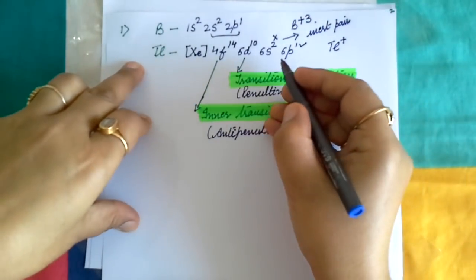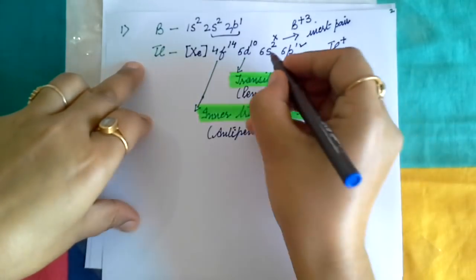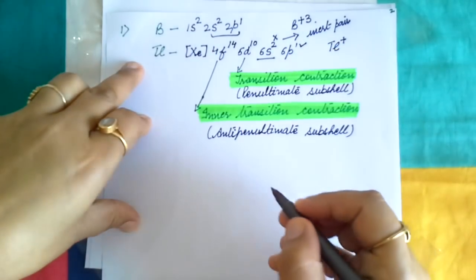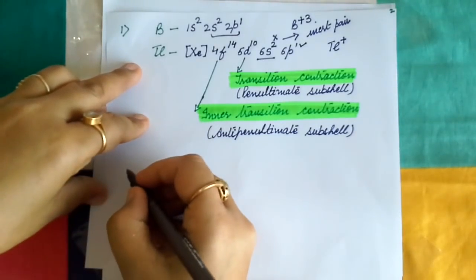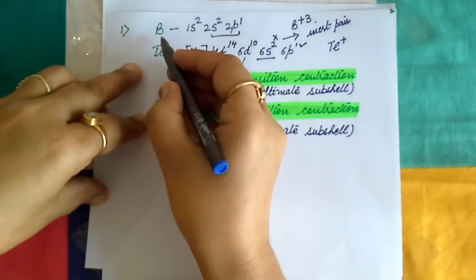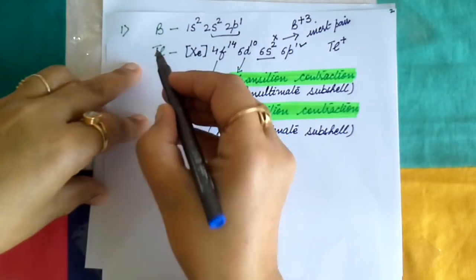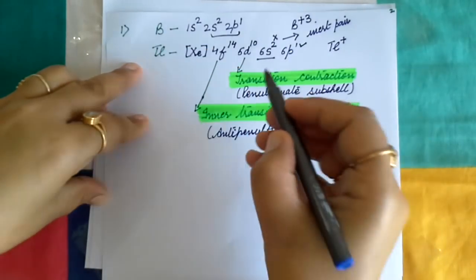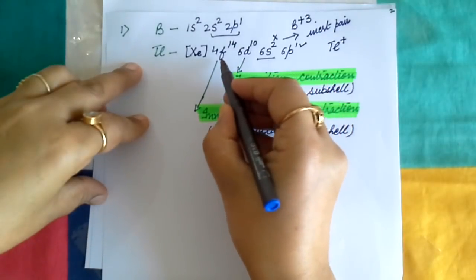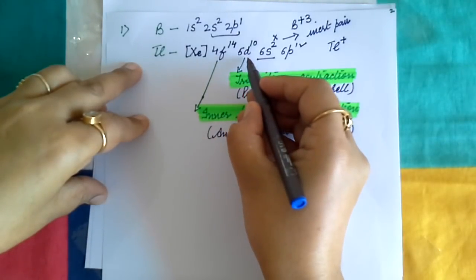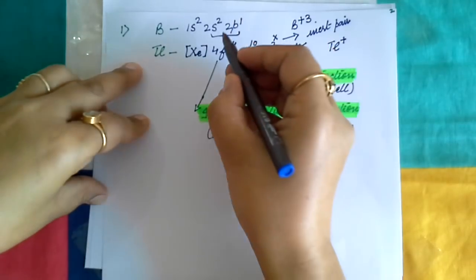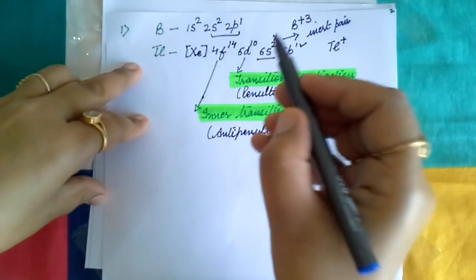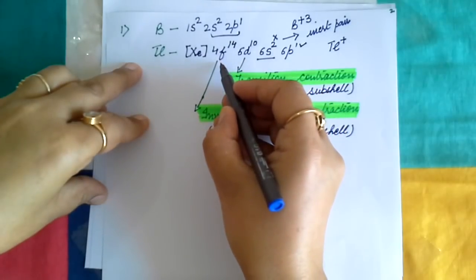Now our key point is to understand why these s electrons act as an inert pair. In the electronic configuration of thallium, there is the presence of d and f electrons from transition and inner transition elements, which are absent in the case of boron. These d and f orbitals have a very poor screening effect.